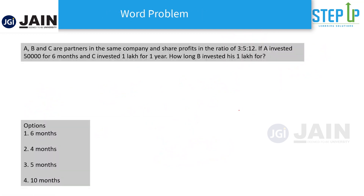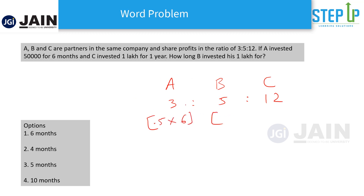Let's also attempt a sample question. A, B, C are partners in the same company and share profits in the ratio of 3 to 5 to 12. If A invested 50,000 for 6 months and C invested 1 lakh for a year, how long did B invest his 1 lakh for? Let's set it up: A is 0.5 lakh × 6 months, B is 1 lakh × K (what we need to find), and C is 1 lakh × 12 months.